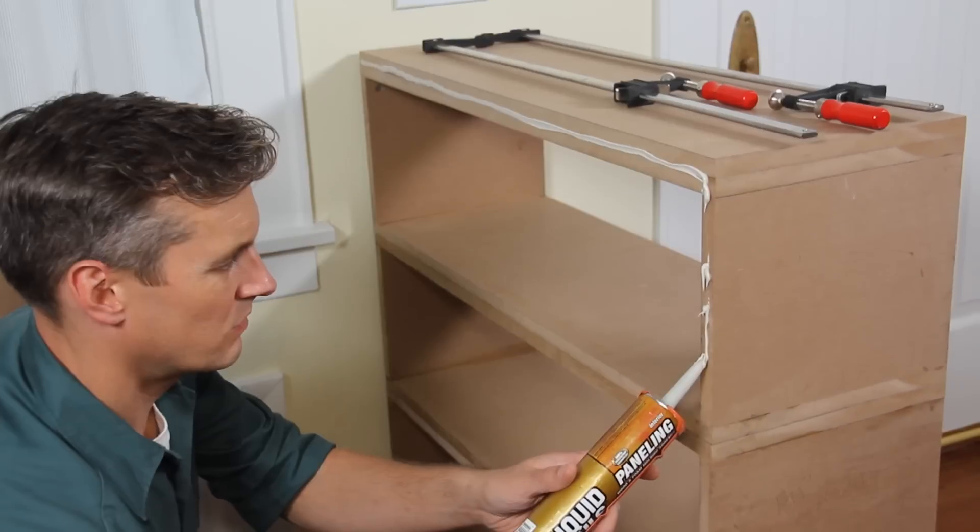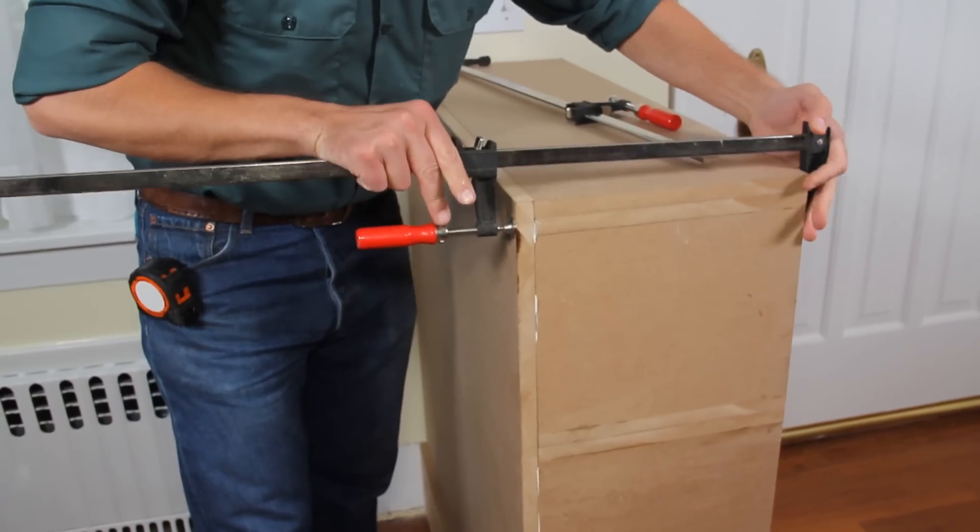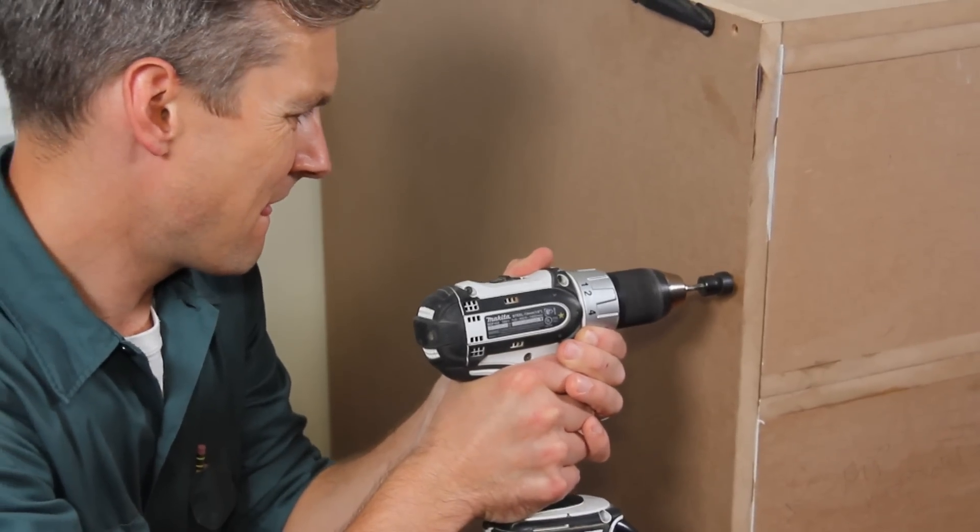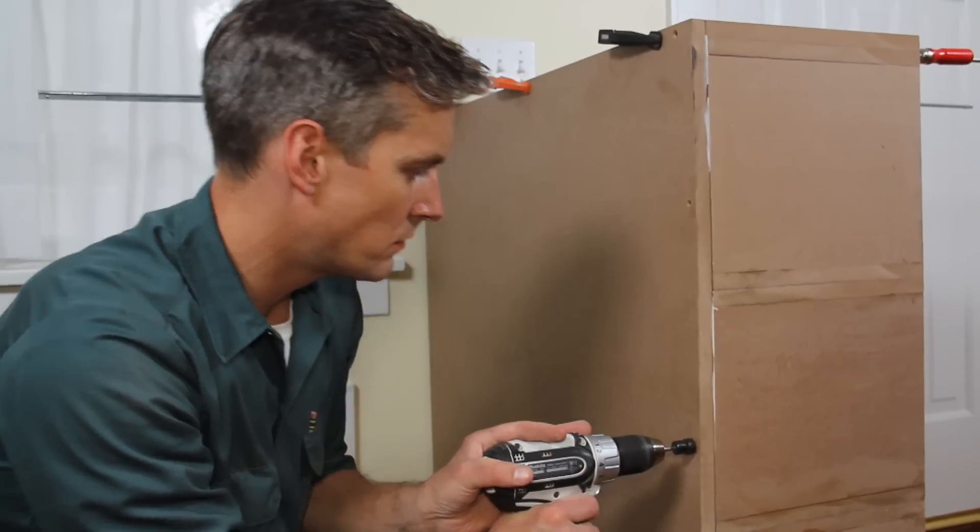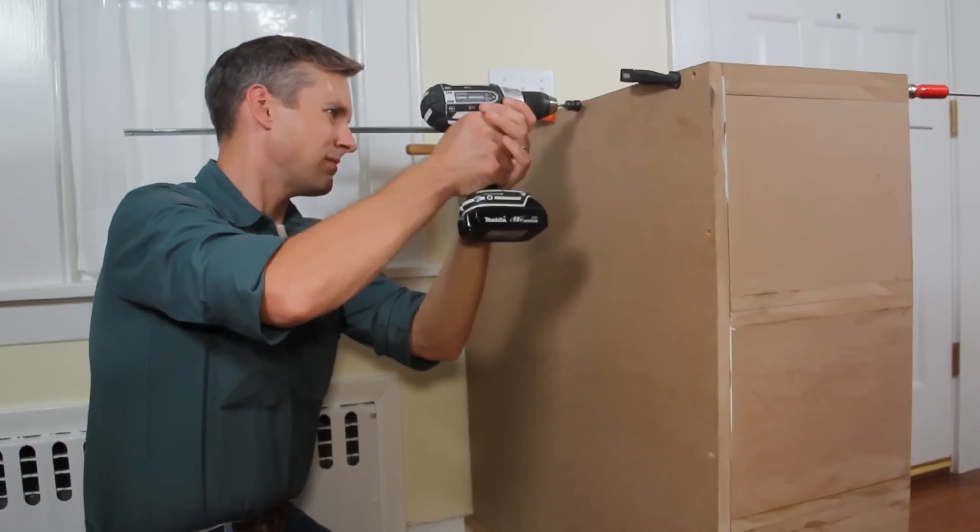Now that you've got your boxes stacked up, measure and cut the back panel of the cabinet to fit. Glue it on, clamp it in place, and screw it down. Just be sure to drill pilot holes first with a countersink bit before driving screws. Otherwise, you'll probably damage the MDF.